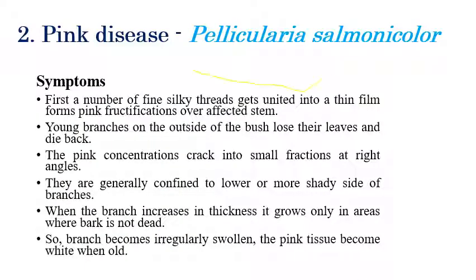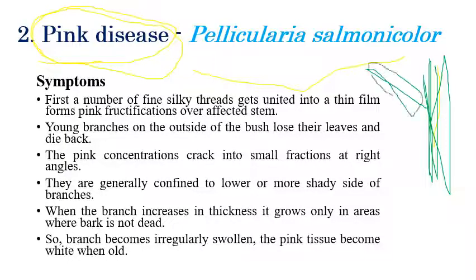The next disease is pink disease, caused by Pellicularia salmonicolor. The name itself indicates that pink spots or pink-like appearance can be seen on leaves as well as the stem. Small pink fructifications can be seen on the affected stem regions and sometimes leaf regions as well.